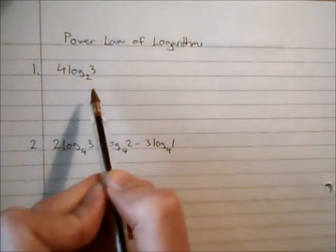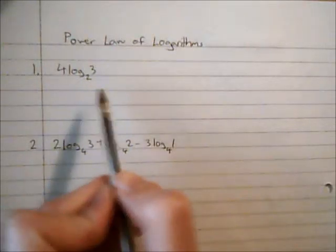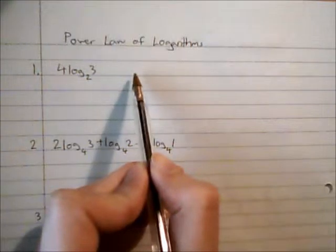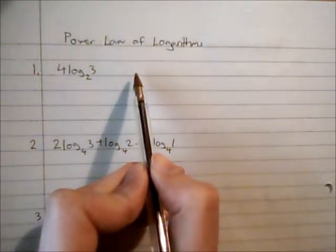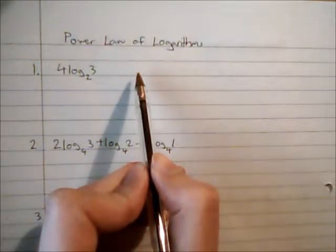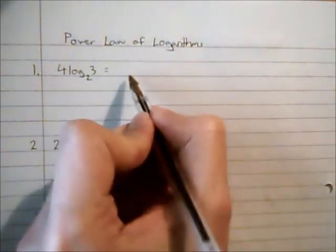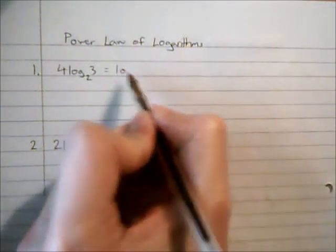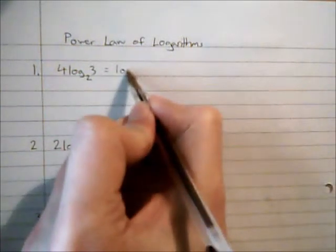We know from the previous video that what happens is we multiply the 3 each time. So we've got 4log₂3, which equals 3 × 3 × 3 × 3. Now we can deal with that in a more efficient way by using powers.